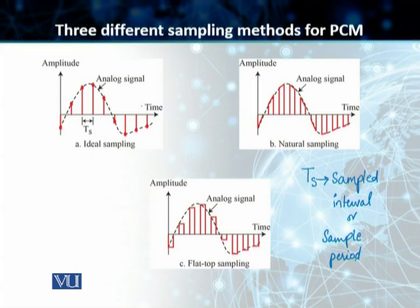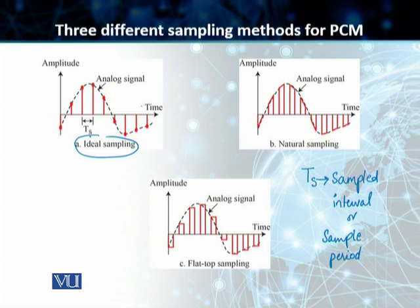The first technique is ideal sampling. In ideal sampling, pulses from the analog signal are sampled at different intervals. The sampling interval is TS, and we have multiple different samples at different amplitudes throughout the analog signal. It is called ideal because it is the ideal method of taking samples, and it is very difficult in reality to employ hardware that can deploy ideal sampling.